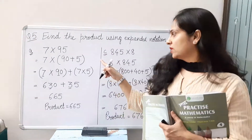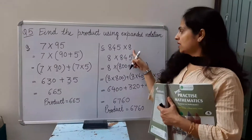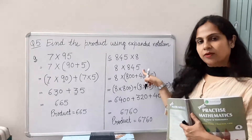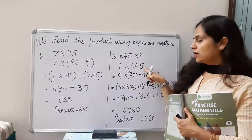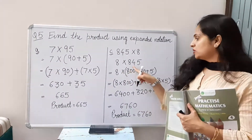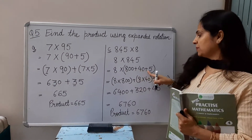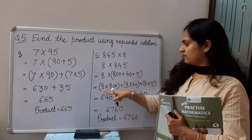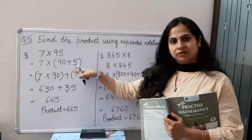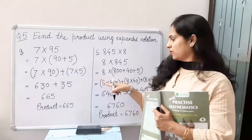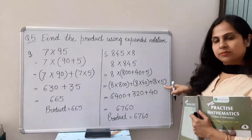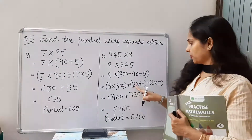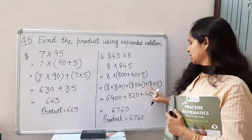Now let's move to Part C — Part B you can do yourself. Part C is 845 multiplied by 8. We write 8 here and 845 next to it, then distribute 845 into expanded form: 800 plus 40 plus 5. We have distributed into 3 parts, so we will multiply 3 times. 8 eights are 64 with two zeros, so 6400. 8 fours are 32 with one zero, so 320. 8 fives are 40.